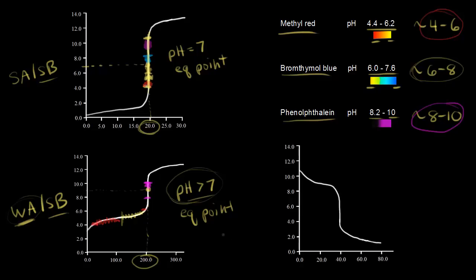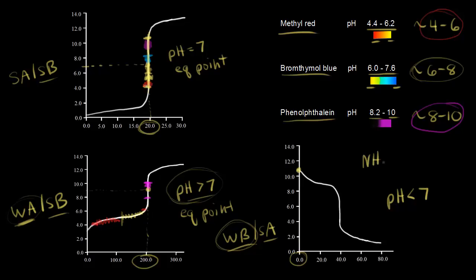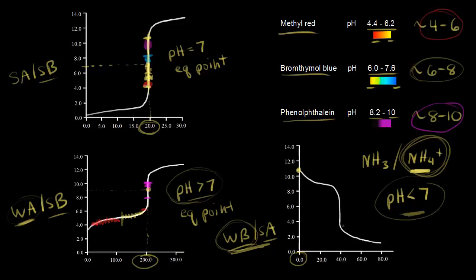Let's move on to the titration curve for the titration of a weak base with a strong acid. We start in the basic range, and the pH at the equivalence point is less than seven. That's because you're protonating your weak base — in our example, NH3 (ammonia) — leaving you with NH4+, which is acidic. NH4+ can donate a proton to water, increasing the hydronium ion concentration, so the pH at the equivalence point is less than seven. In our example, we got a little over five.